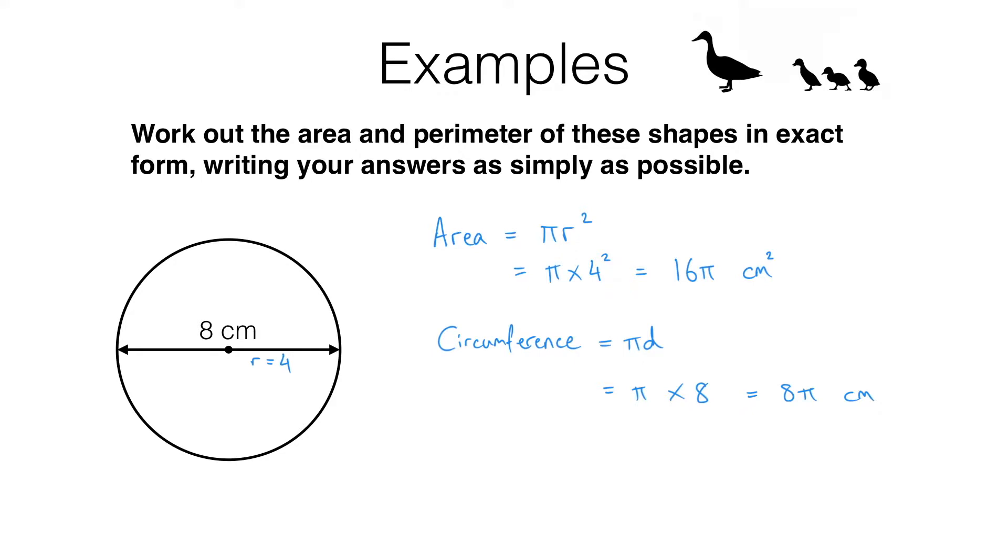If you remember in algebra we can leave out the multiplication sign and also we like to put numbers before letters when we're multiplying them together, which is why we get 8 pi here and 16 pi up here. If you try to work this out on a calculator you would get 25.13 something, but that decimal expansion would go on forever.